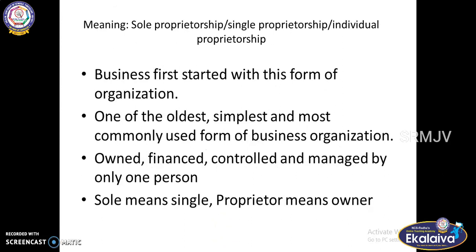Sole means single — individual proprietorship. Business first started with this form of organization. There was no partnership, no joint stock company, no Hindu undivided family. This was the first and oldest form of organization — one of the simplest and most commonly used. It is owned, financed, controlled, and managed by only one person. Sole means single; proprietor means owner.